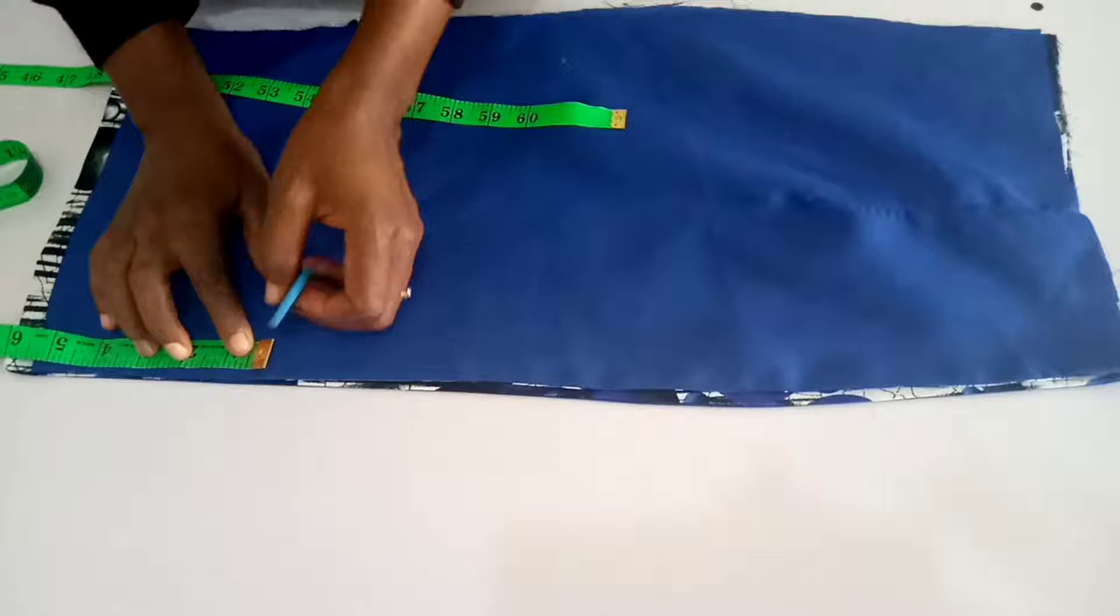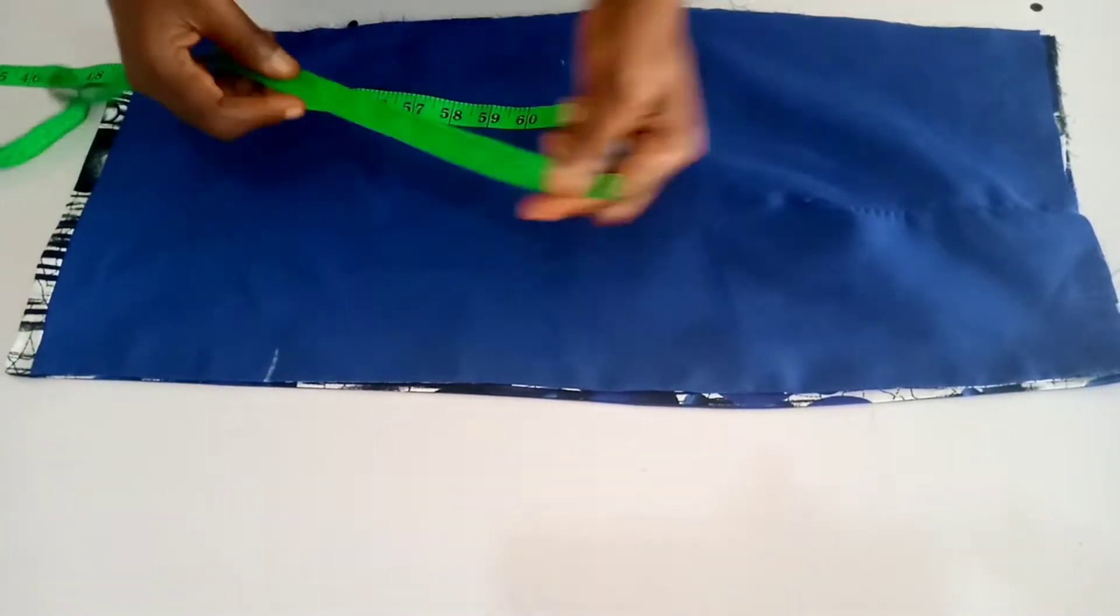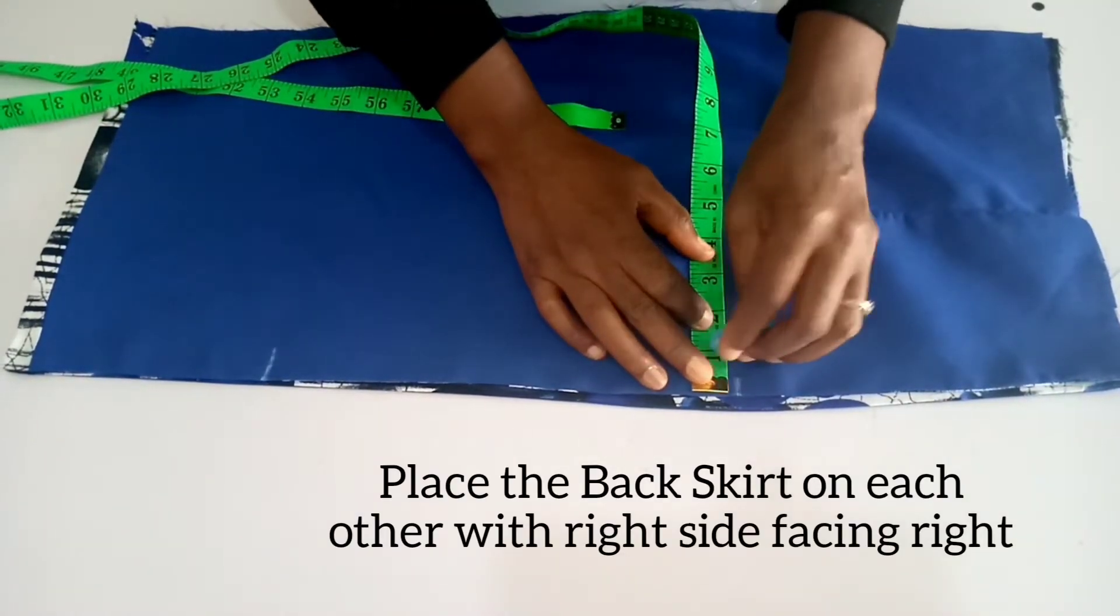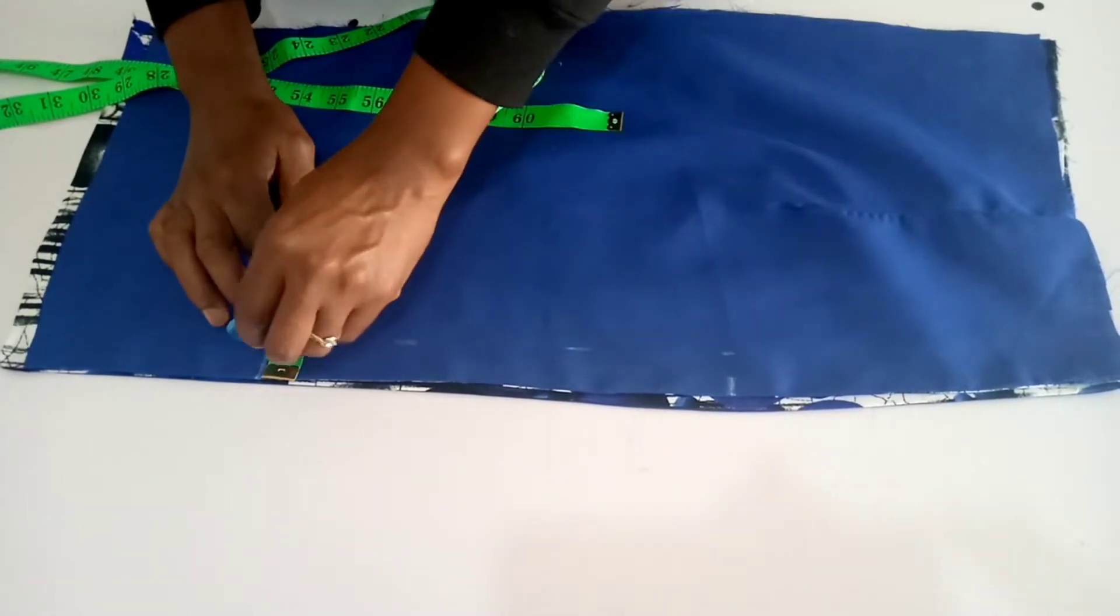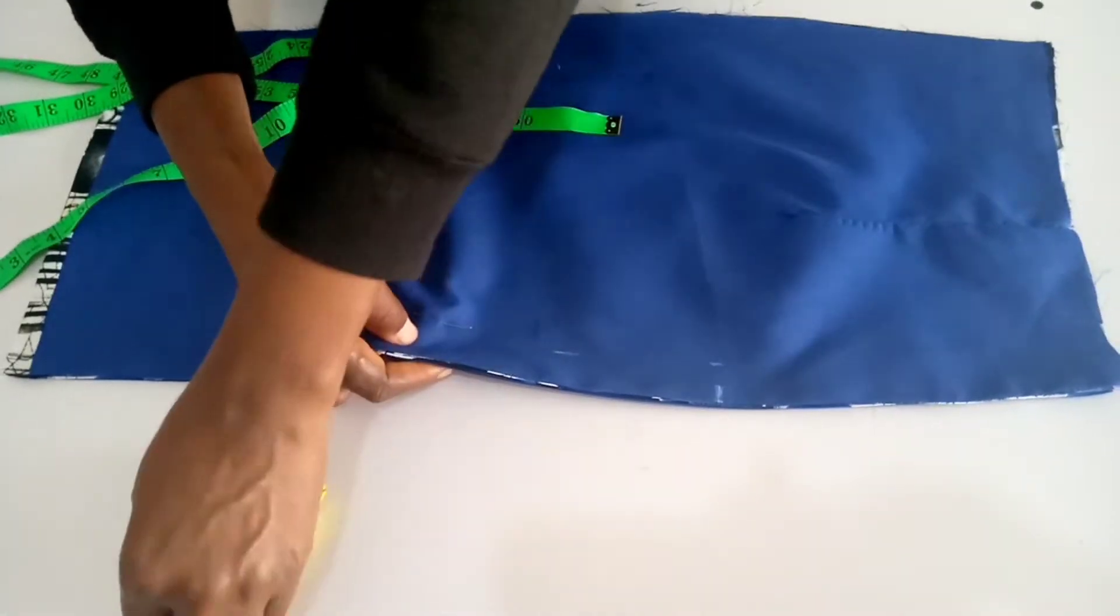After sewing, measure your slits and mark. Slits is 6 inch. Then we measure 1 inch for zip allowance. We'll sew the zip allowance after pinning. It's 1 inch.